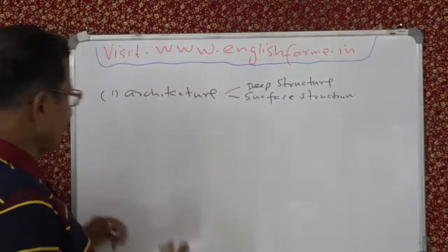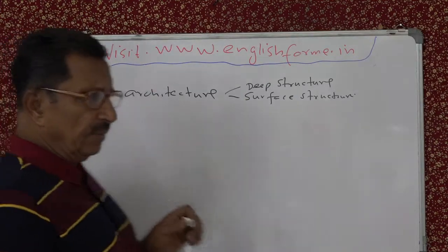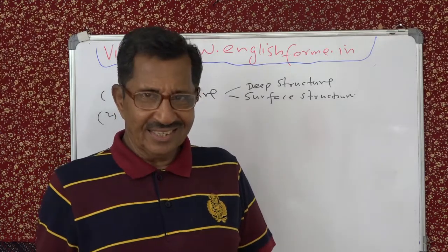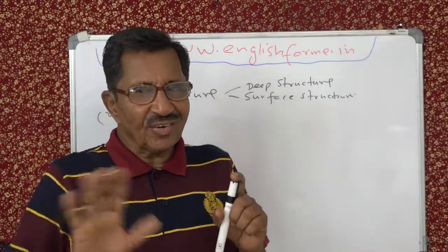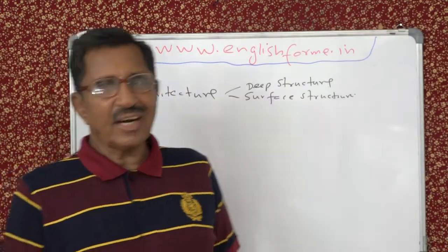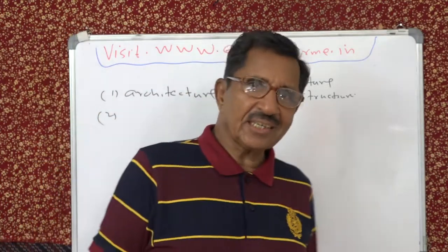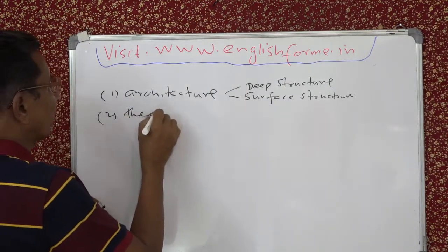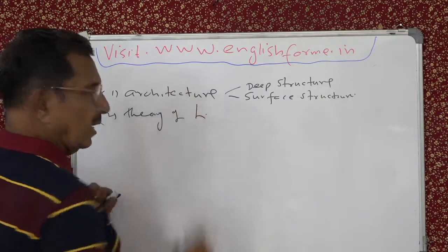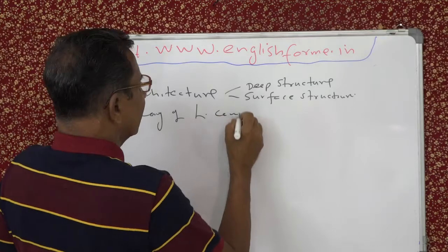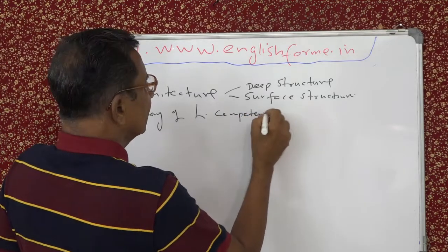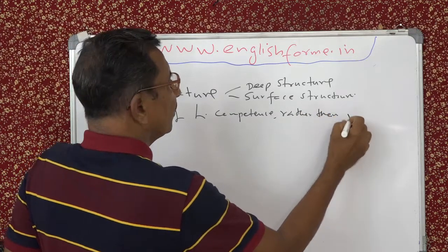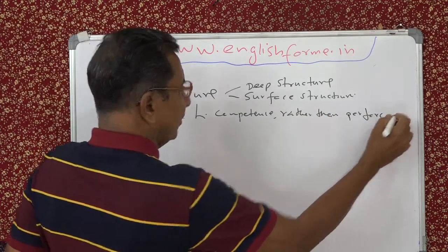The second point: this is not a theory of performance. This is a theory of competence. How you perform language is not at all an aspect of this grammar. We are not concerned about performance; we are concerned about your competence. So this is a theory of competence rather than performance. That is the second feature.